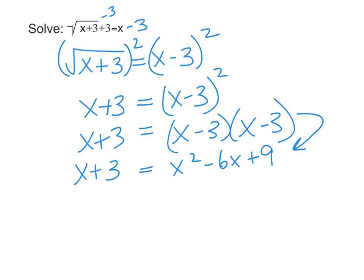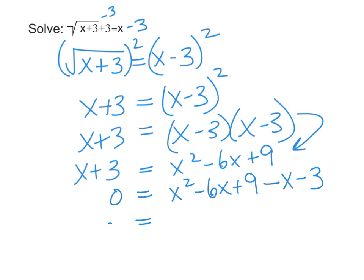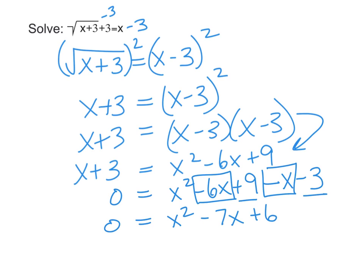Now we move x plus 3 over to the right side, leaving 0 on the left. So we have x squared minus 6x plus 9 minus x minus 3. Combining like terms: minus 6x minus x gives minus 7x, and plus 9 minus 3 gives plus 6. The simplified polynomial is 0 equals x squared minus 7x plus 6.